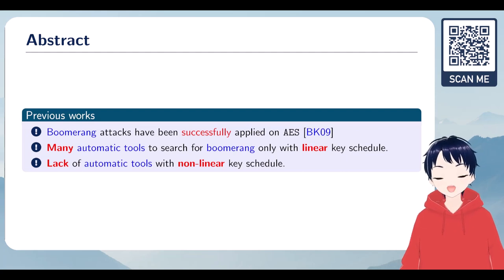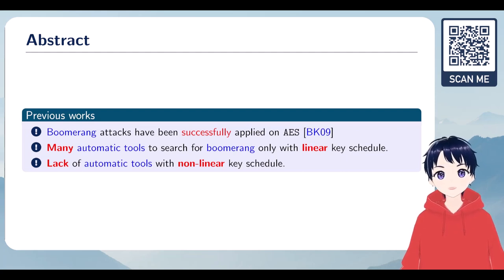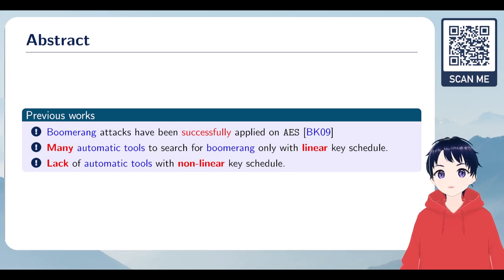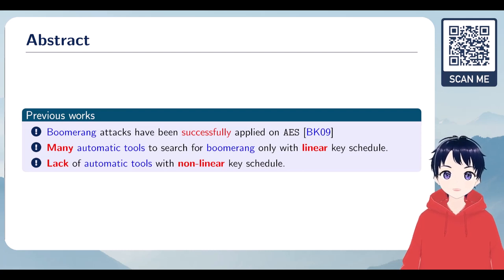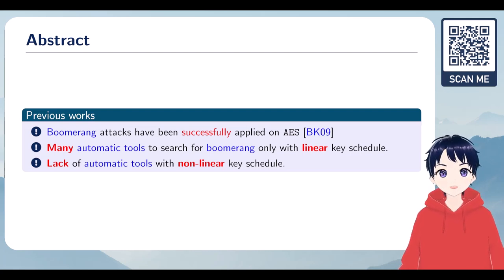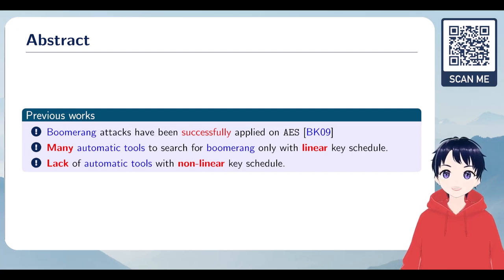AES is one of the most widely used encryption algorithms in the world. Since it was first introduced, many researchers have studied its design, looking to probe the algorithm's security. In recent years, the boomerang attack was found to be powerful against many block ciphers, especially full-round AES.